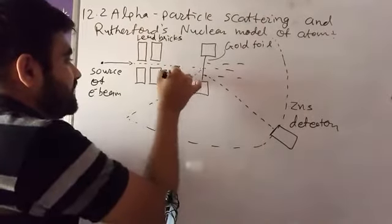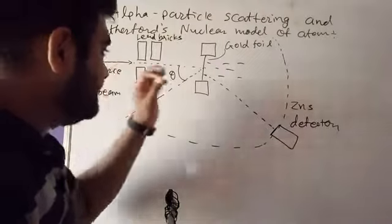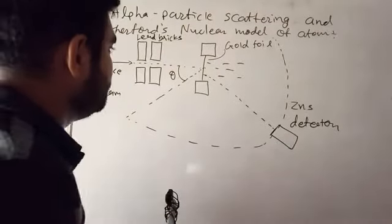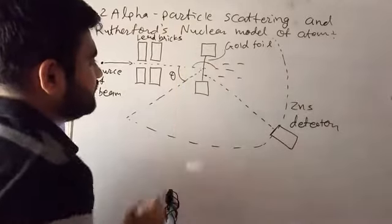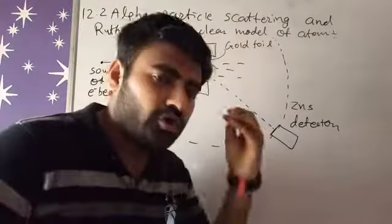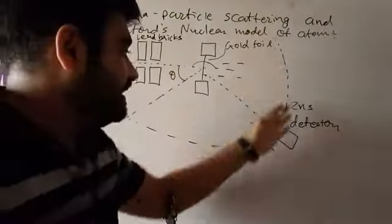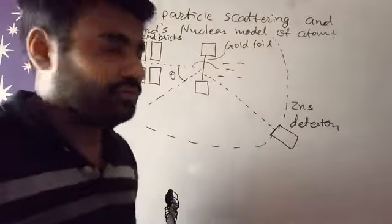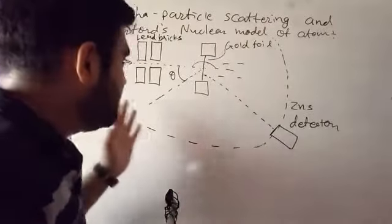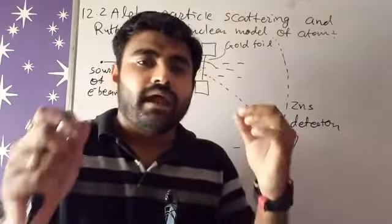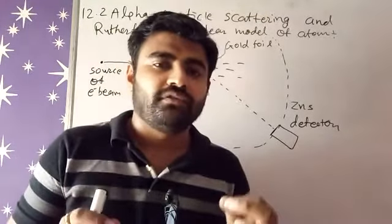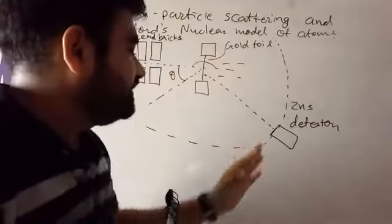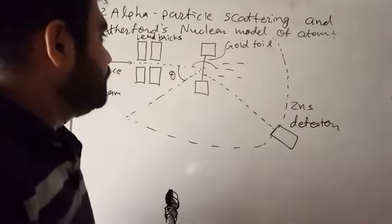So if we denote that angle by theta, so this angle is also theta. Right? This angle is also theta. So there are many angles because we use here traveling detector. So detector can travel anywhere, and we can find at what position we get the most of electrons get scattered on the surface.